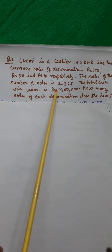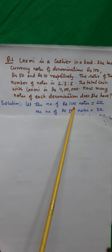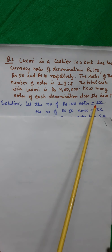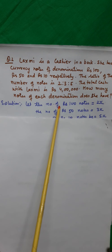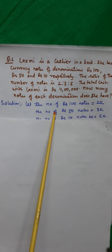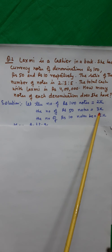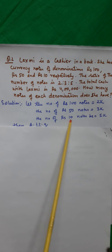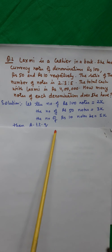Let us assume the number of 100-rupee notes is 2x, because the ratio is 2:3:5. Therefore, let the number of 100-rupee notes be 2x, number of 50-rupee notes be 3x, and number of 10-rupee notes be 5x.